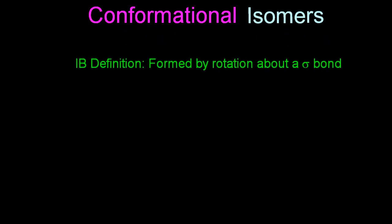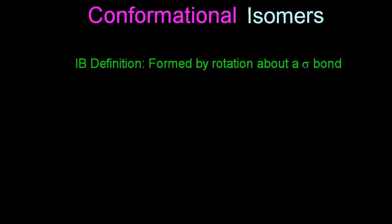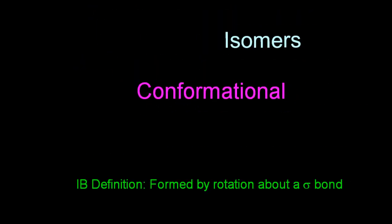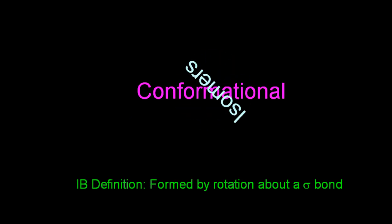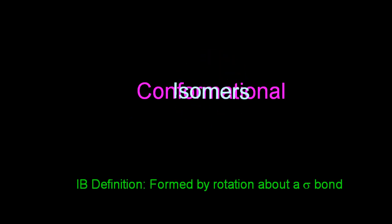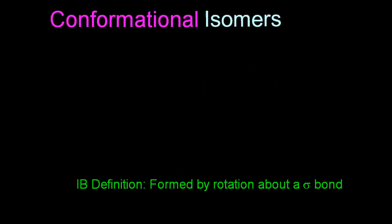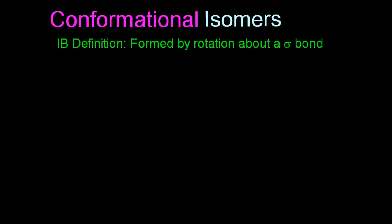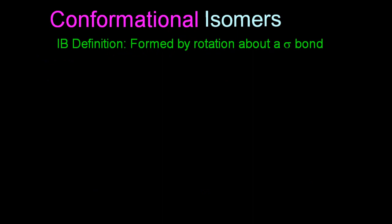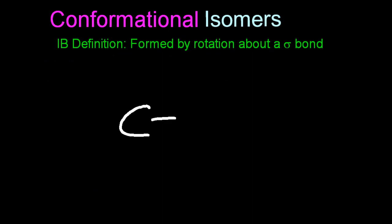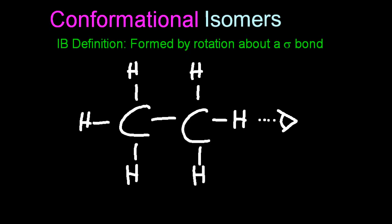The IB definition for conformational isomers is that they are formed by rotation around a sigma bond. Don't forget that all single bonds are sigma bonds. Let me draw out a molecule of ethane — now imagine looking along the carbon-carbon single bond.